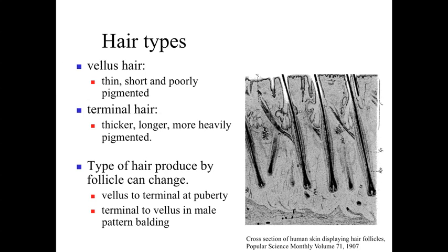The first appendage we'll look at is hair. There are two basic types: vellus hair, which is relatively thin, short, and very poorly pigmented — found over most of an individual's body — and terminal hair, which is much thicker, longer, and more heavily pigmented, such as the hair on top of your head. The type of hair a follicle produces can change over time; for example, follicles in the armpits change from vellus to terminal hair at puberty.